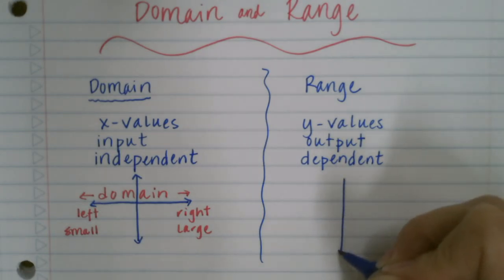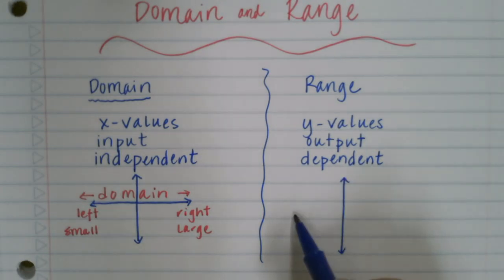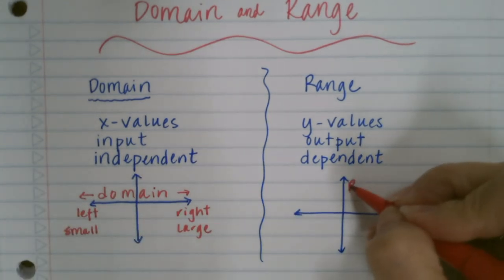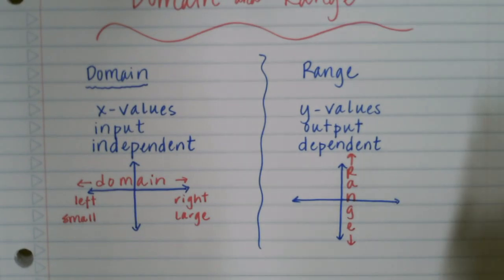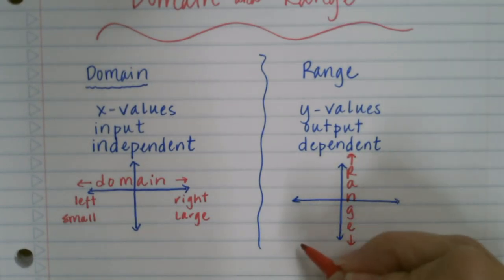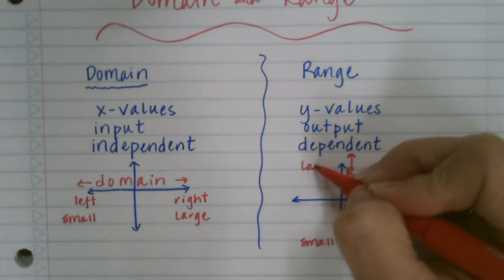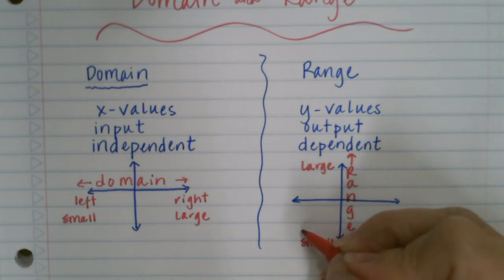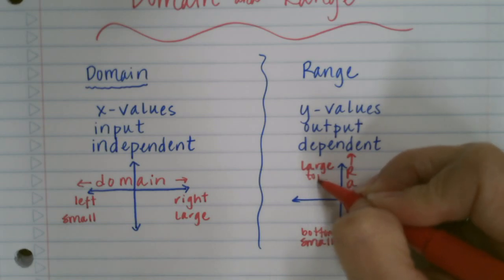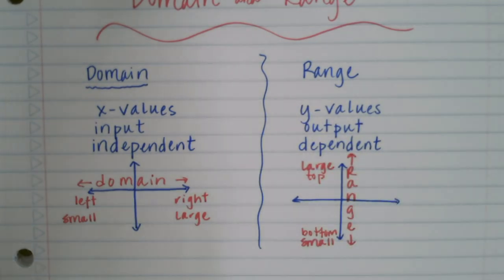So looking on a graph, when we want to talk about the range of a function, we are talking about this direction there. And whenever we write the range, it's the same way as domain where it's smallest to largest number. So what we're going to do is we're going to go from the bottom to the top.